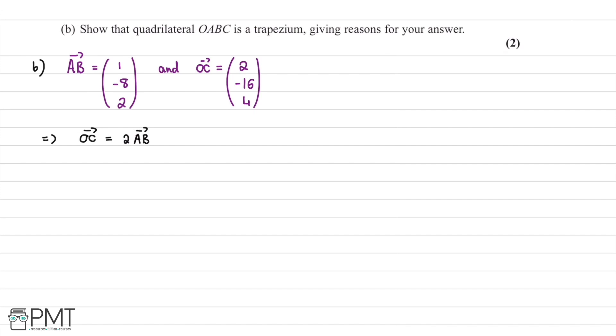So you might ask, how is this relevant? This means that vector OC is parallel to vector AB. We know that a trapezium has one pair of parallel sides. OC is parallel to AB. Therefore, we can conclude that OABC is a trapezium.